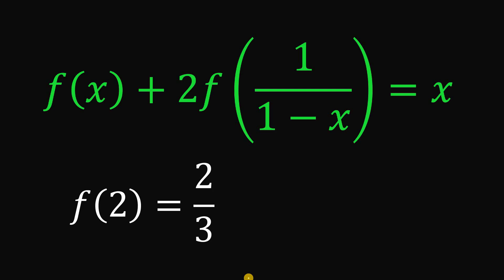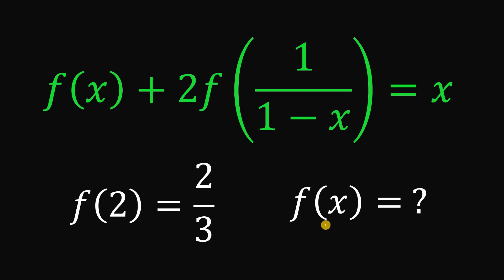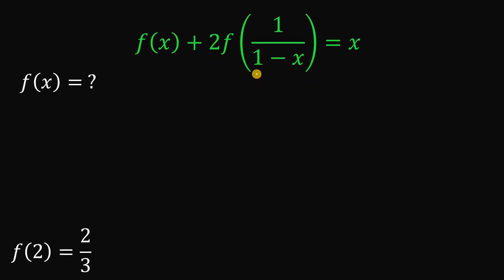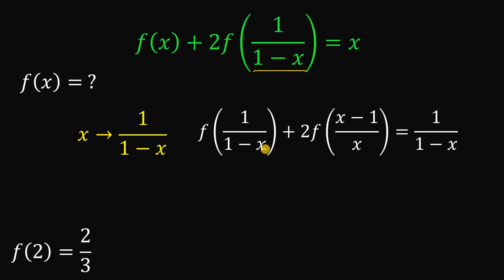Someone in the comment section will ask: can you figure out what is the value of f of x? Given this function, can you find the value of f of x to verify that f of 2 is 2 over 3? The answer is yes. Using the same method, first let x be replaced with 1 over 1 minus x. If we do that and simplify, we get f of 1 over 1 minus x plus 2 times f of x minus 1 over x equals 1 over 1 minus x.